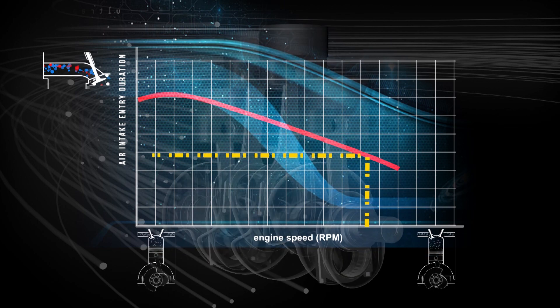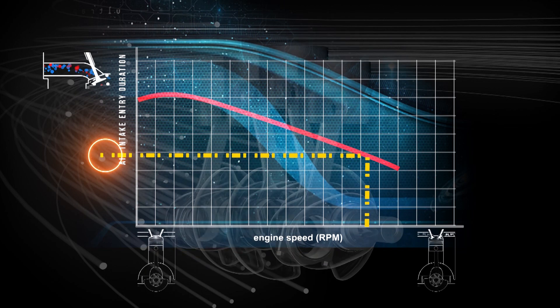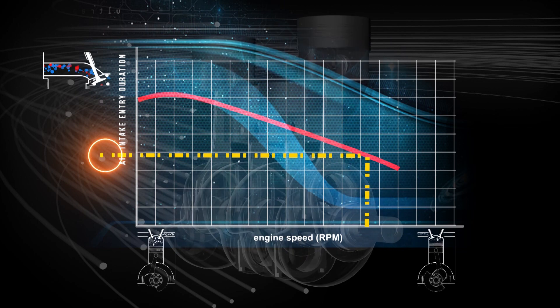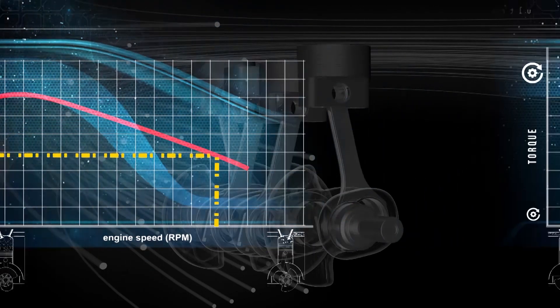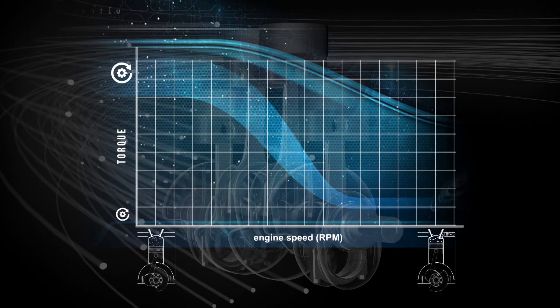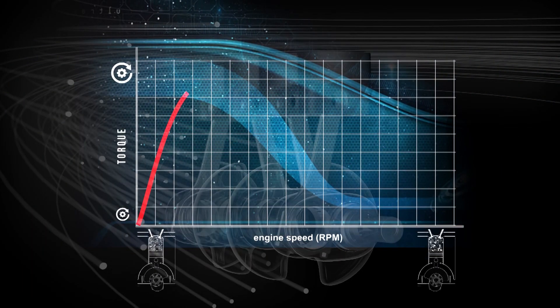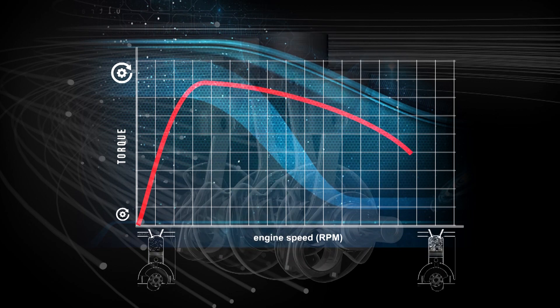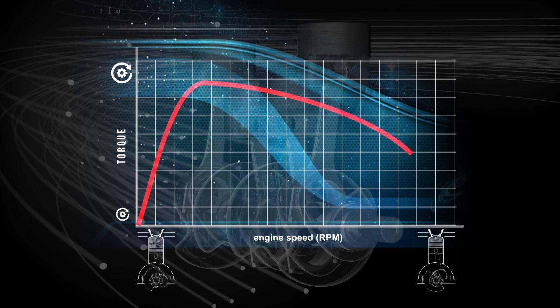At these speeds, intake manifolds and valves begin to restrict the flow of air, resulting in reduced cylinder volumes. At higher crankshaft speeds, most naturally aspirated standard production engines become less volumetrically efficient due to this reduced EMS.